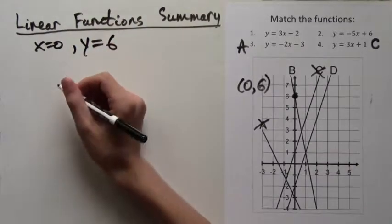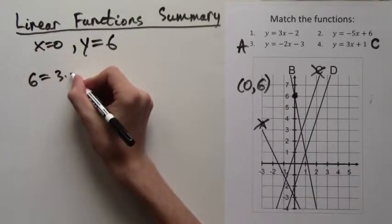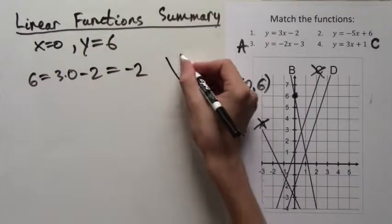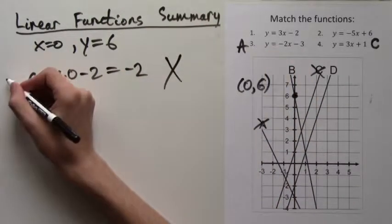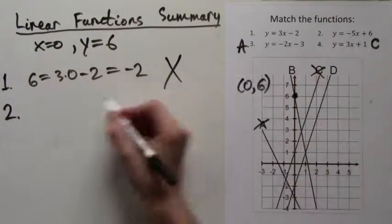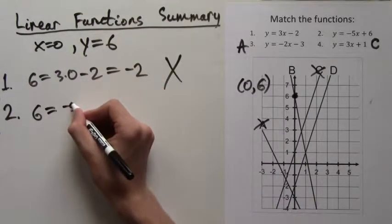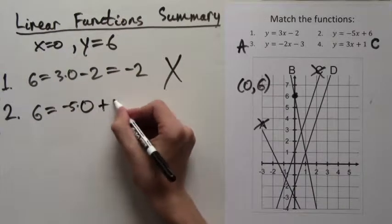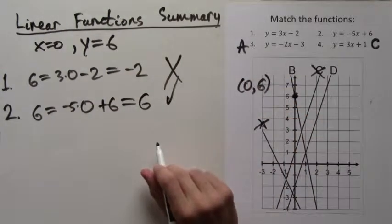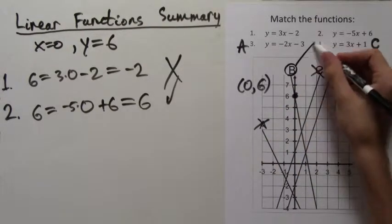So for formula 1, we would get 6 equals 3 times 0 minus 2, which means 6 equals negative 2. That's wrong. So we know that line B has to be the graph of formula 2. And just to be sure, we'll plug it in, and we'll get 6 equals negative 5 times 0 plus 6, and that equals 6. 6 equals 6 is true. So we have B corresponding to formula 2.